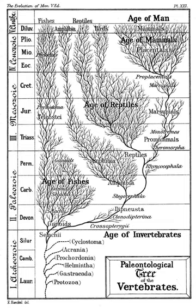Speciation is the lineage-splitting event that results in two separate species forming from a single, common, ancestral population. A widely accepted method of speciation is called allopatric speciation.